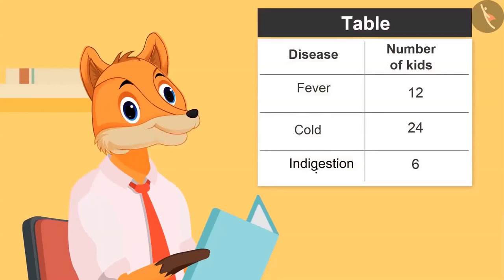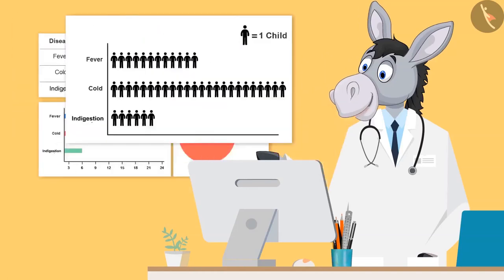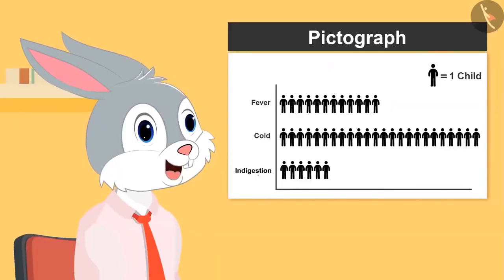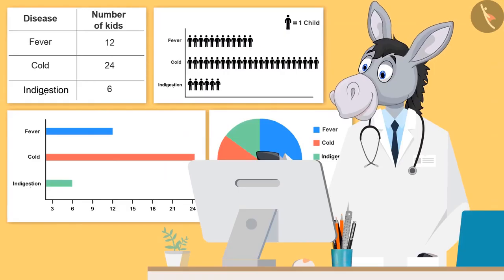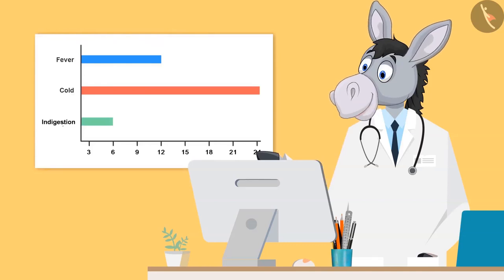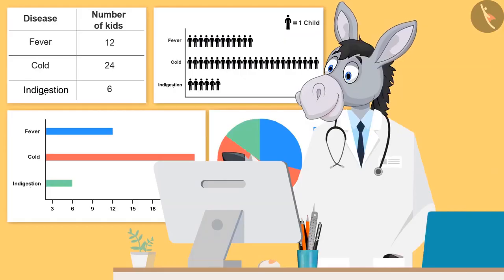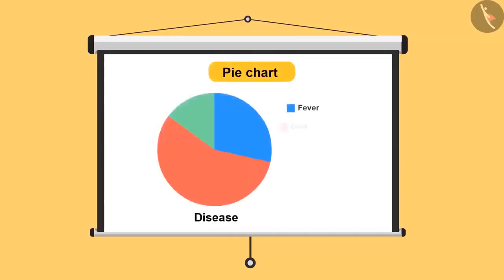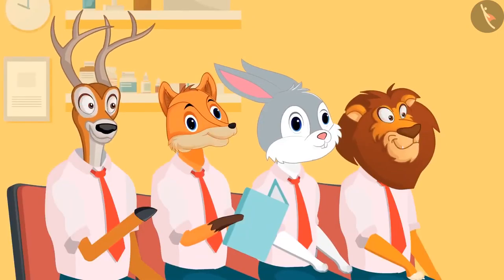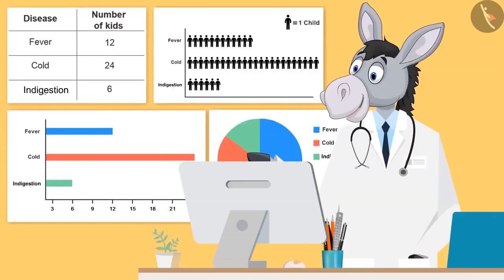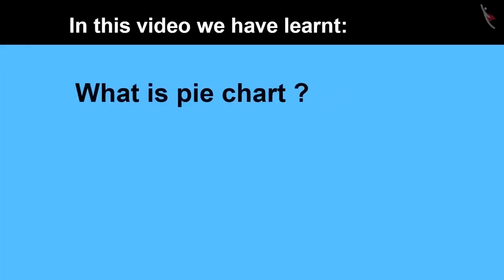Yes, this is called a table. Absolutely right. Now look at this data in another form. This is a pictograph. Very good. Can you tell me which chart is this? This is a strip chart. Very good. Kids, you all know about various types of charts. Do you know about pie chart? No, doctor uncle. So the chart you are seeing on this wall is known as a pie chart. Let's learn about this. Today we have learnt what is a pie chart.